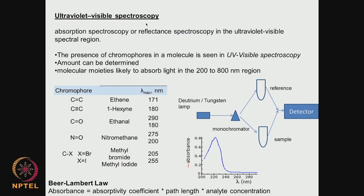Ultraviolet visible spectroscopy is also very useful. It involves absorption spectroscopy or reflectance spectroscopy in the ultraviolet or visible spectral region. We can monitor if there are any chromophores — functional groups like C=C, C≡C, C=O, aromatic groups, N=O and so on. These are called chromophores and they have certain characteristic wavelengths, so we can monitor whether chromophores are present in a sample and determine the amount.